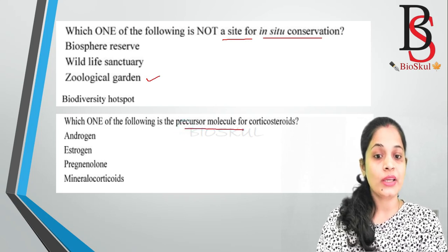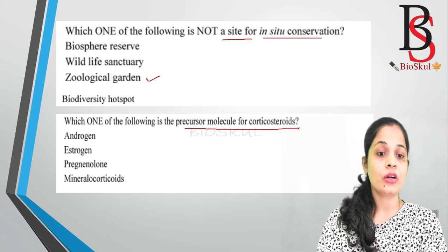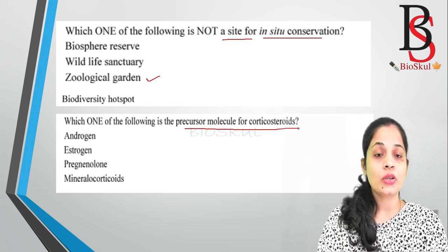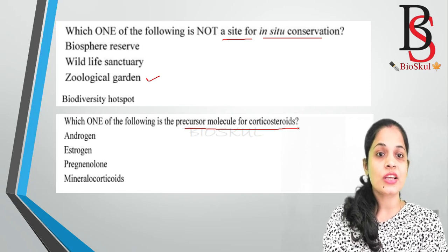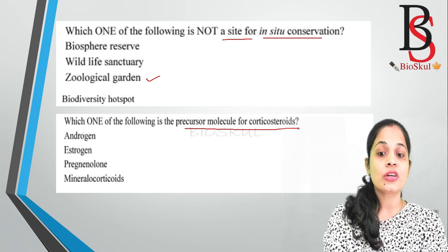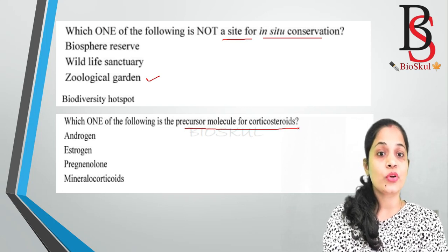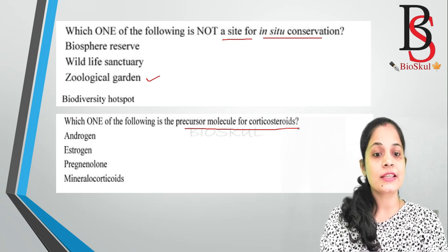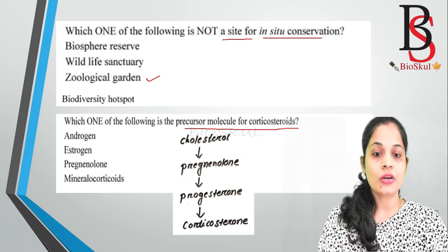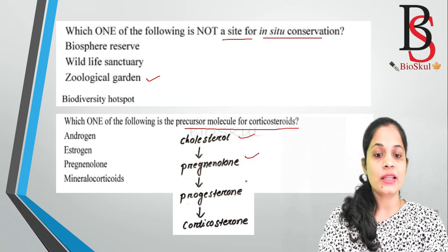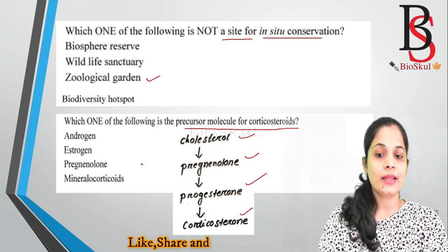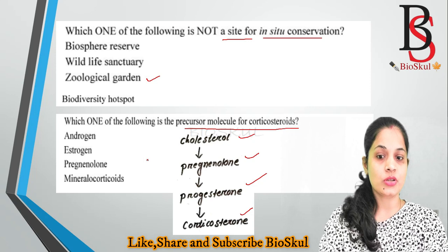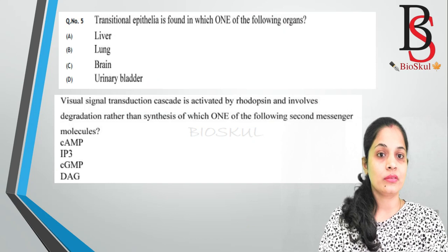Question four: which one of the following is the precursor molecule for corticosteroids? All steroid hormones are synthesized from cholesterol. The pathway goes: cholesterol → pregnenolone → progesterone → corticosteroids. Since there is no cholesterol in the options, the correct answer is pregnenolone.